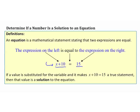In this case, x plus 10 equals 15. The value I would need to substitute for x would be 5, because 5 plus 10 gives me 15. So 5 is a solution to this equation. If I substituted a value that was not 5, like 6, then I would have on the left side 16 equals 15. That's not a true statement, therefore 6 is not a solution to this equation.